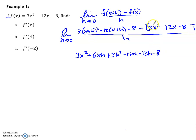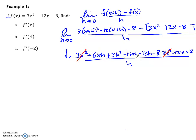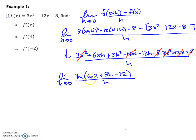Minus 8. Then I'm going to distribute my negative, so negative 3x squared plus 12x plus 8, all over h. Now if I try to plug in h equals 0 at this point, I just get 0 over 0, which means I can do something to reduce this. Everything that didn't have an h cancels, and that's going to happen pretty much every time. Taking an h out of everything left over, I get 6x plus 3h minus 12 over h. The h's cancel, then I can plug in 0, and I end up with 6x minus 12.